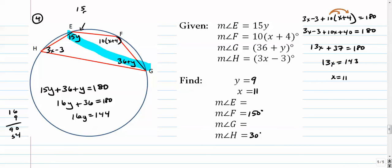36 plus 9. 36 plus 9 is 45. And that makes sense to me because that adds up to 180.